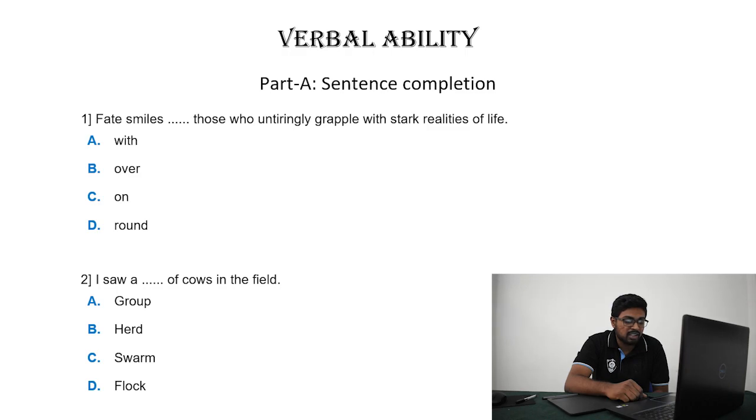Next one is: I saw a dash of cows in the field. For this type of question, you have to be aware of different kinds of groups or clusters. For example, a flock of birds or a pack of wolves or something like that. You should be well aware of what a group of something is called. For cows, it is known as herd. So the answer is: I saw a herd of cows in the field.